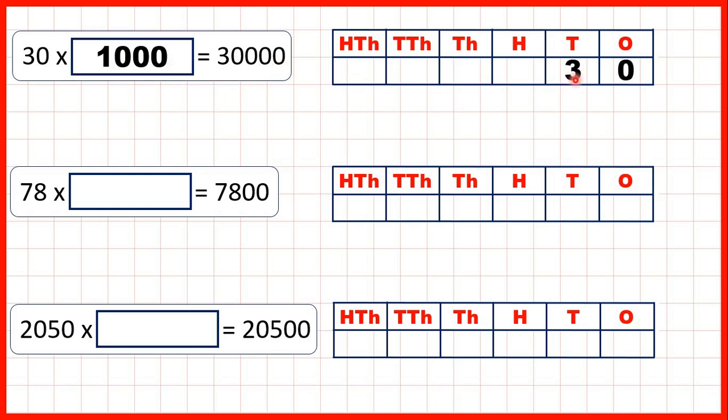And what really happens when we multiply by 1000 is that the digits move three place values to the left and we write zeros in our empty hundreds, tens, and ones columns.